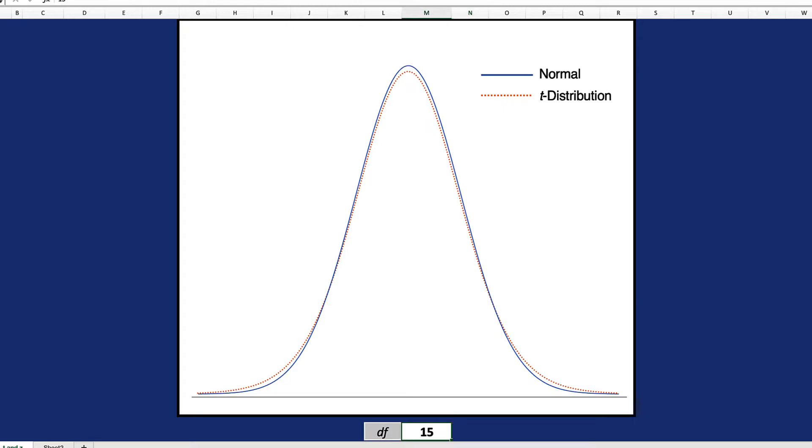Now I'm going to increase the degrees of freedom to 15 and watch what happens to those tails. They move in much closer to a normal distribution. Let me increase the degrees of freedom again, this time to 30. And now we see that our T distribution lines up very closely to the normal curve.